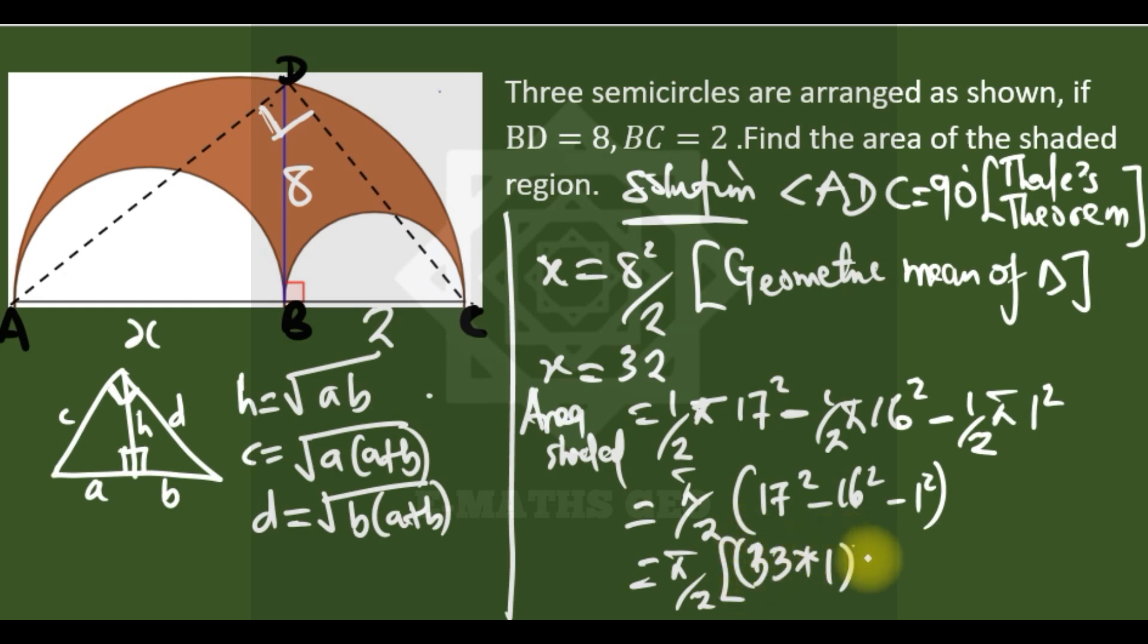Minus 1. So I use difference of two squares here, which is (17 plus 16) times (17 minus 16). 17 plus 16 is 33, while 17 minus 16 is 1. So I have 33 minus 1 is 32. Finally, 32 divided by 2, so we have 16 π. So that is our answer. It's a very nice and tricky question.